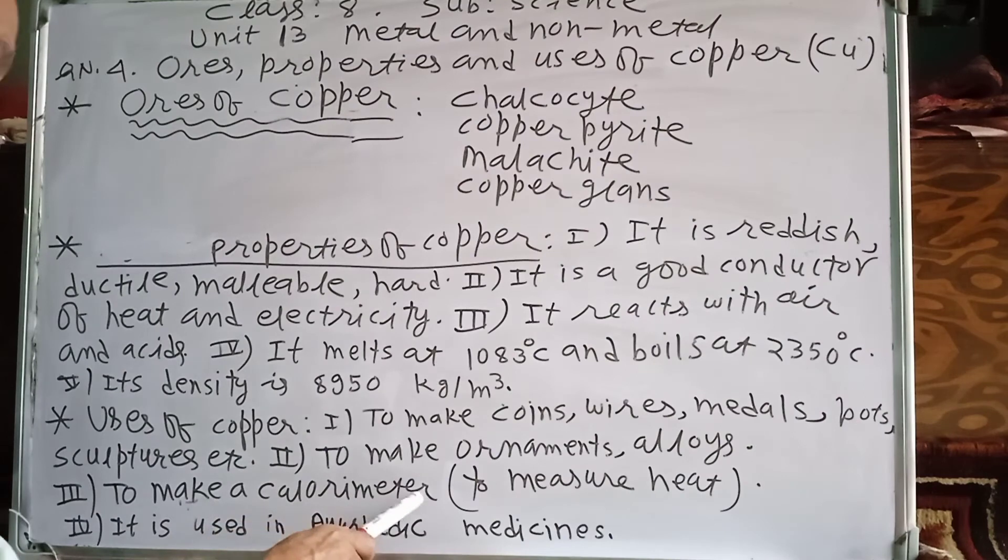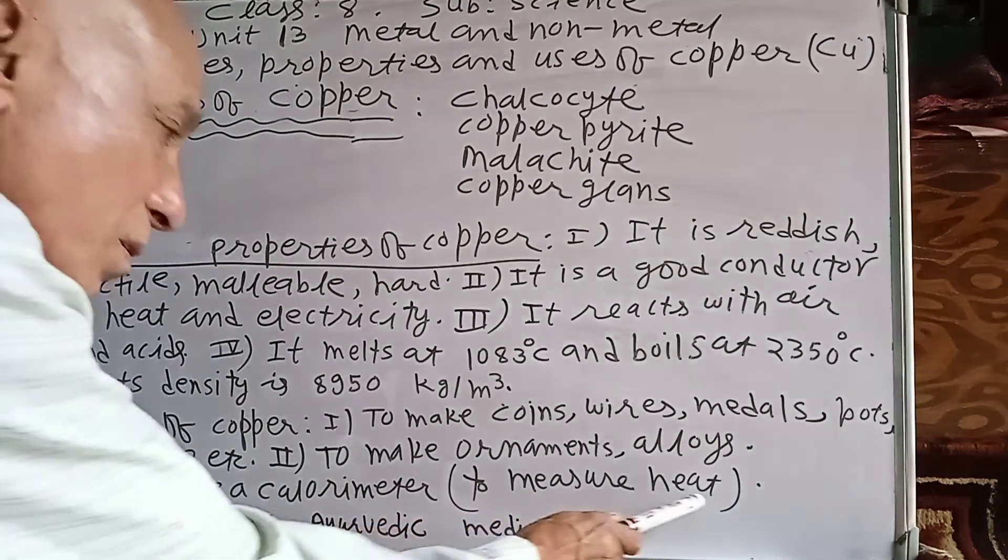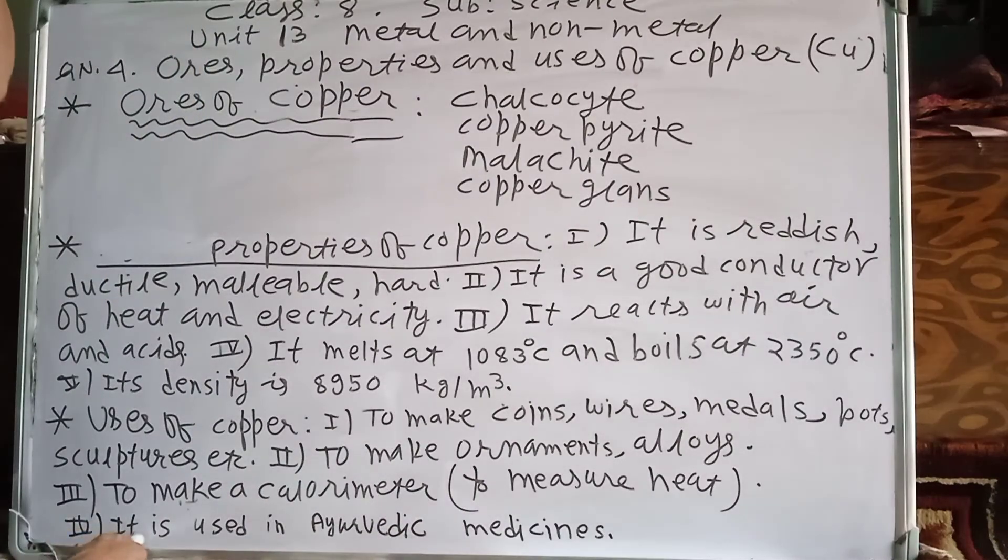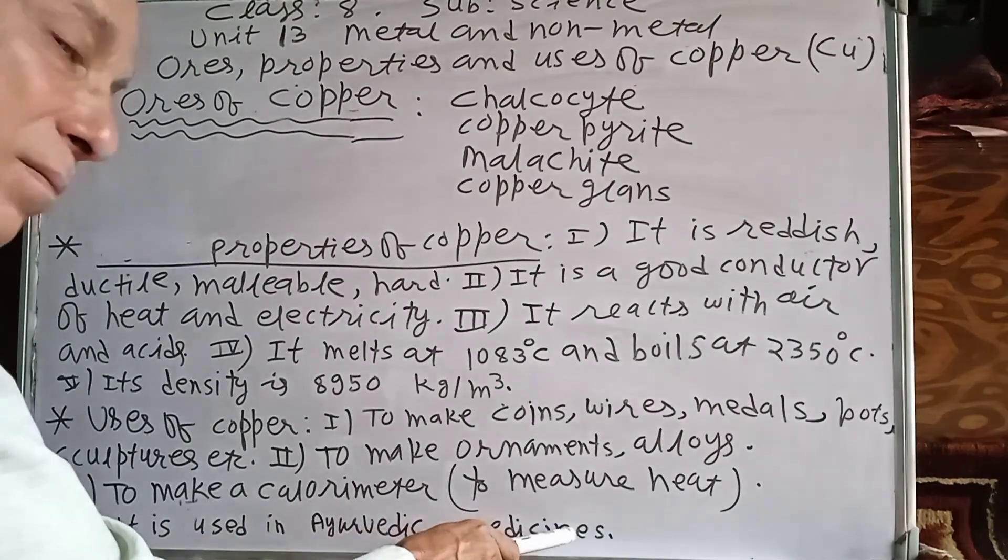To make a calorimeter. A calorimeter is a device which is used to measure heat. Number 4, it is used in Ayurvedic medicines.